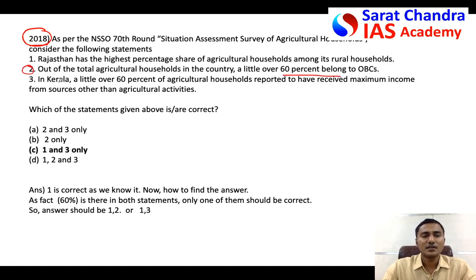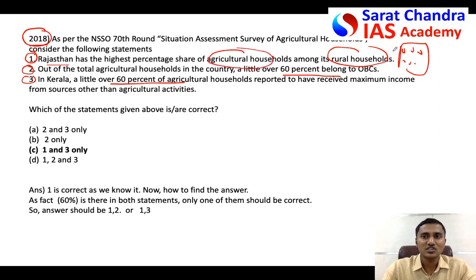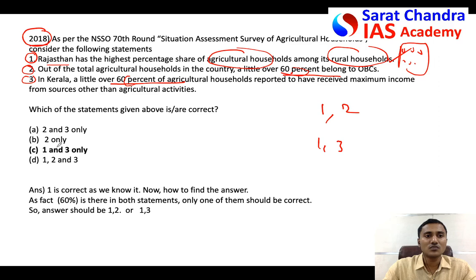For example, in a 2018 question — observe that statement two has a number and statement three also has a number. As I told you, when a number repeats in two statements, one of them will be correct and the other wrong. Using existing knowledge, I know statement one is correct — among rural households, the majority are agricultural households and Rajasthan has the highest percentage. So among two and three only one will be correct, meaning the answer is either one-two or one-three.